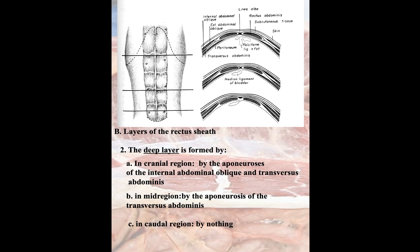For the deep layer: in the cranial region, it is formed by the aponeurosis of the internal abdominal oblique and the transverse abdominal muscle, where the internal oblique aponeurosis splits into two portions — one for the superficial layer and one for the deep layer. In the mid-region, only the transverse abdominal muscle contributes to the deep layer. In the caudal portion, no muscle contributes to the deep layer, so there is no deep layer of the rectus sheath caudally.